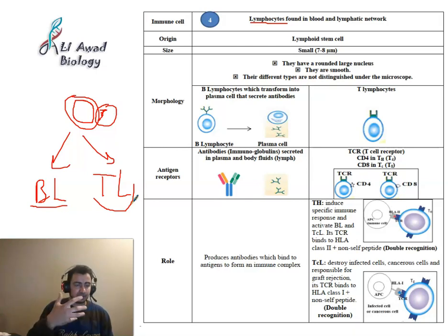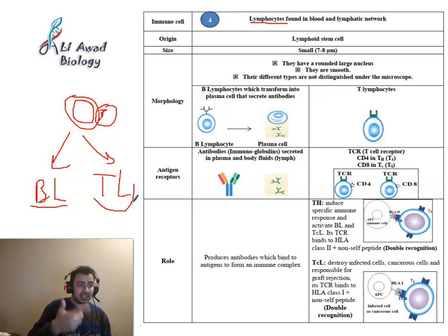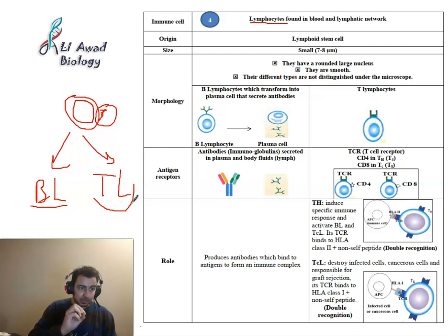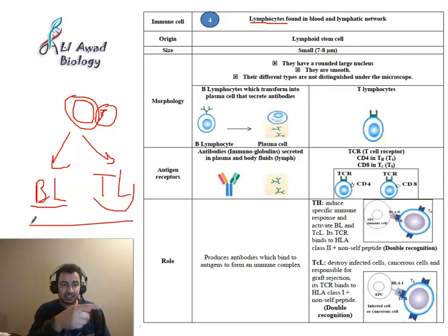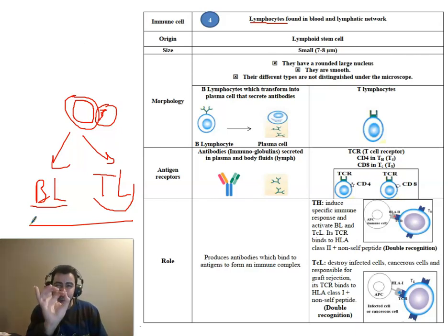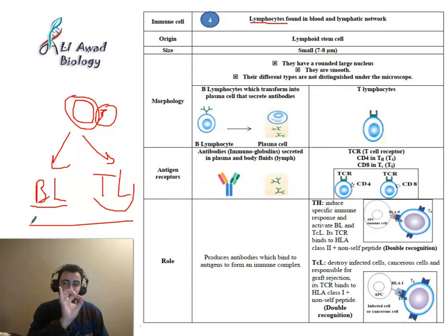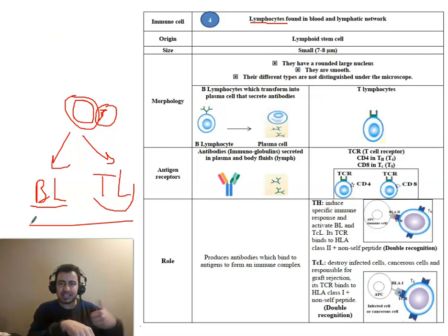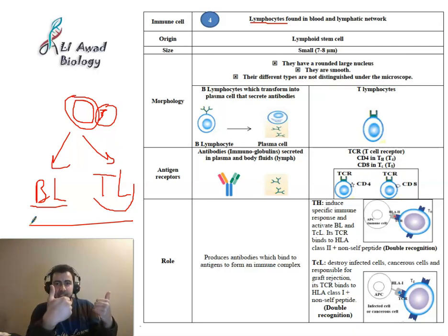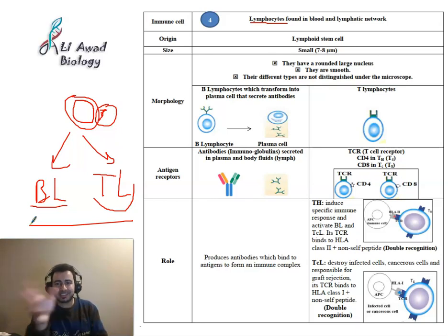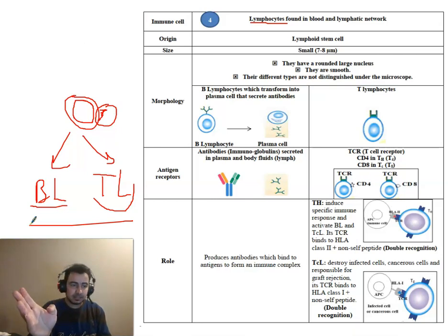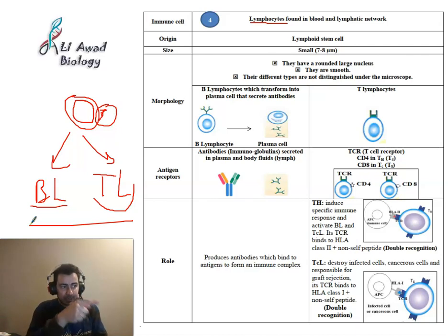Because lymphocytes have antigen receptors on their surfaces, they are called specific immune cells — unlike monocytes and granulocytes. Monocytes and granulocytes don't have antigen receptors; they attack quickly without recognizing the intruder, responding within minutes to hours. Lymphocytes, on the other hand, need one to two weeks to mount their specific immune response because they must first recognize the specific antigen.